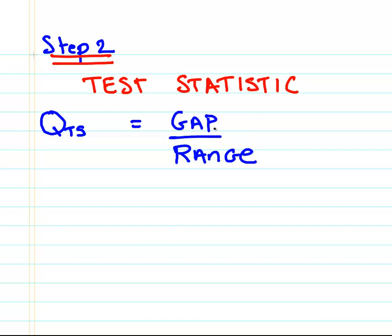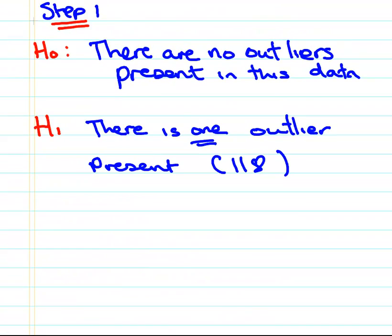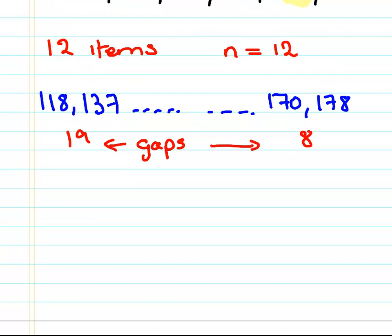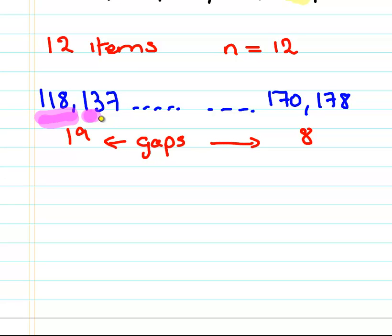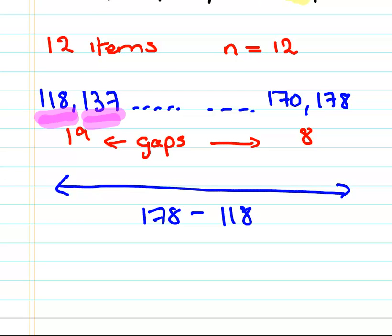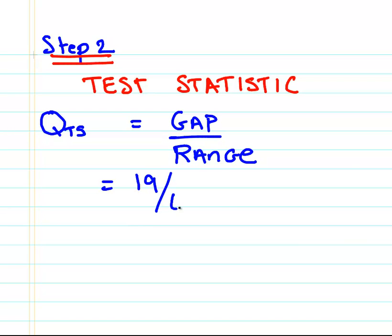The gap is the gap between our outlier and the next lowest value, 137. The gap here is the distance between our outlier and the next lowest value, it's going to be 19. The range is the entire range of the data, essentially 178 minus 118, so that's going to be 60. So essentially our test statistic is going to be 19 over 60. You can work that out in your calculator, it is roughly equal to 0.32.